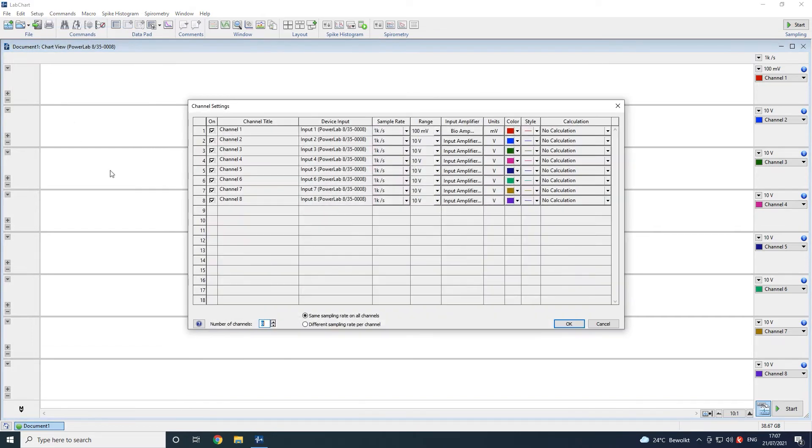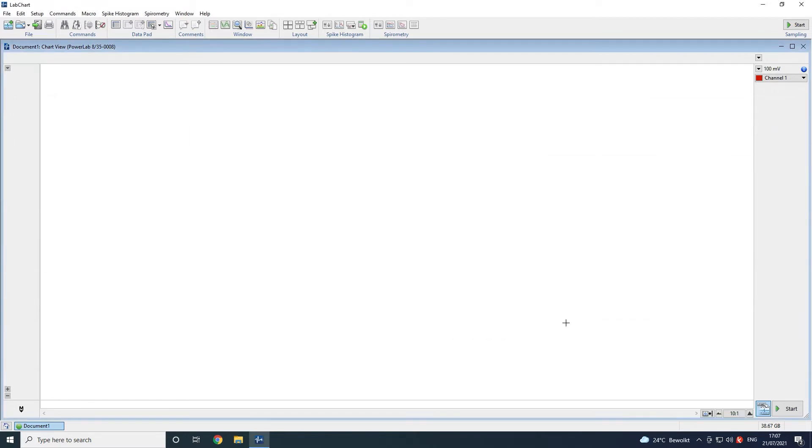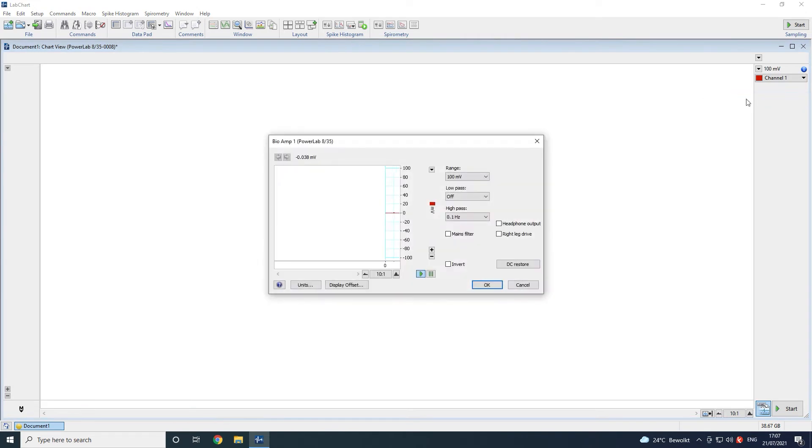With the subject connected to the lead wires, set the number of required channels and then click on bioamp in the drop down list of the channel it's connected to.